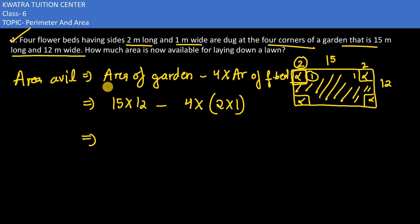So now 15 into 12, we will multiply 15 by 12 and that would result in 180 minus 8. 4 into 2 is 8, and 180 minus 8 would be 172 meter square. So that would be your answer for area available for laying down a lawn.